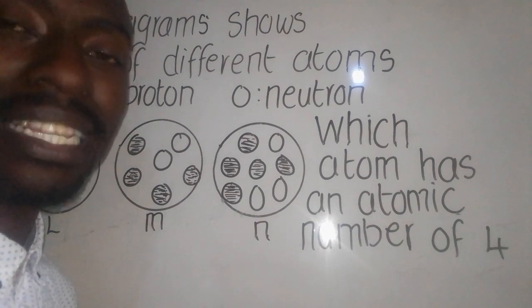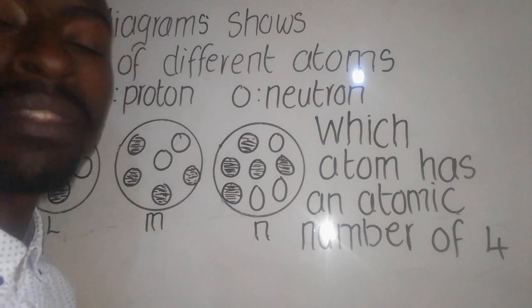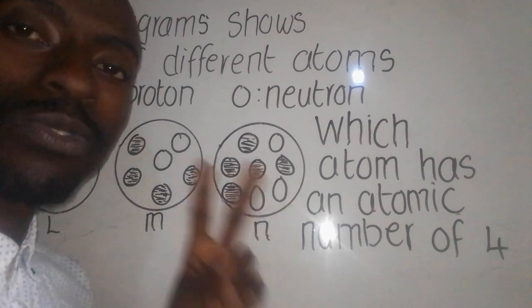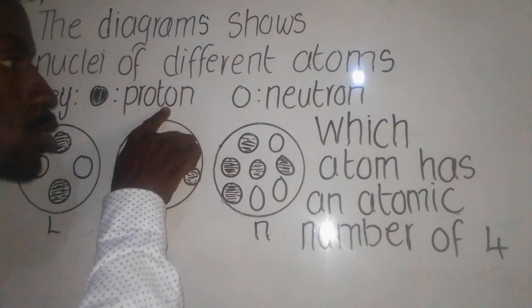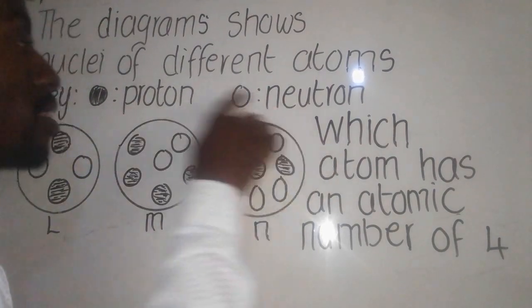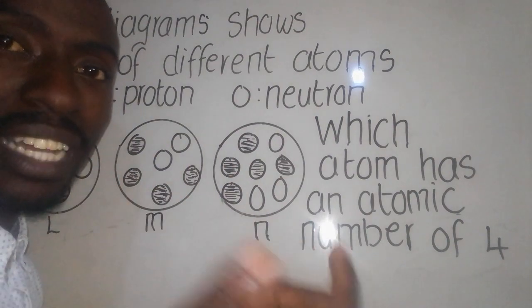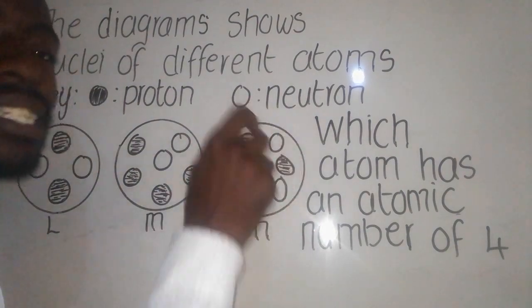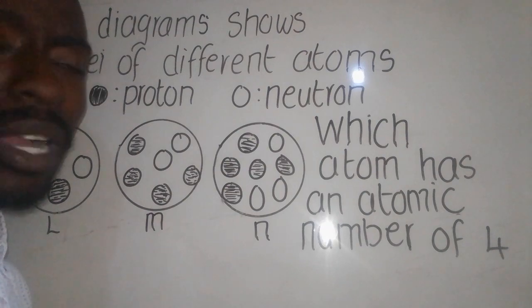An atom is made up of a central part known as the nucleus. The nucleus consists of two particles: the proton and the neutron. The proton is a positively charged particle. The neutron is a neutral particle.